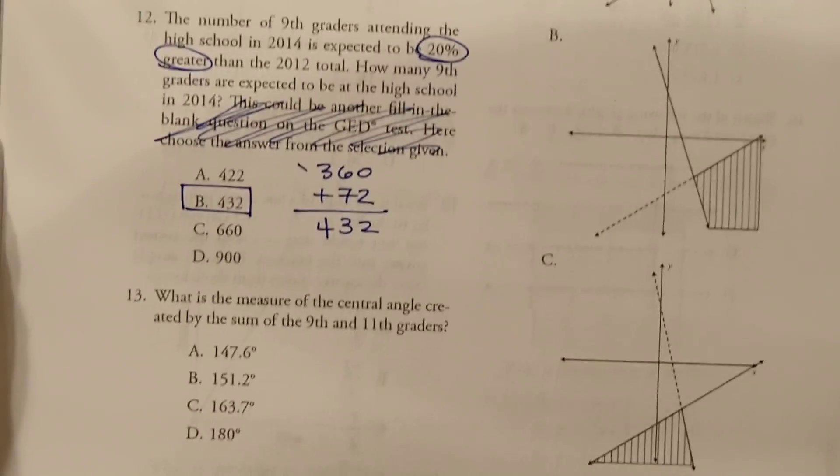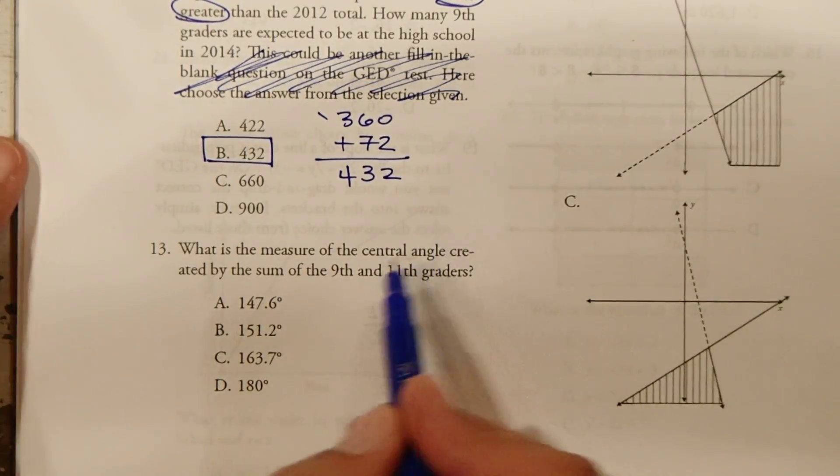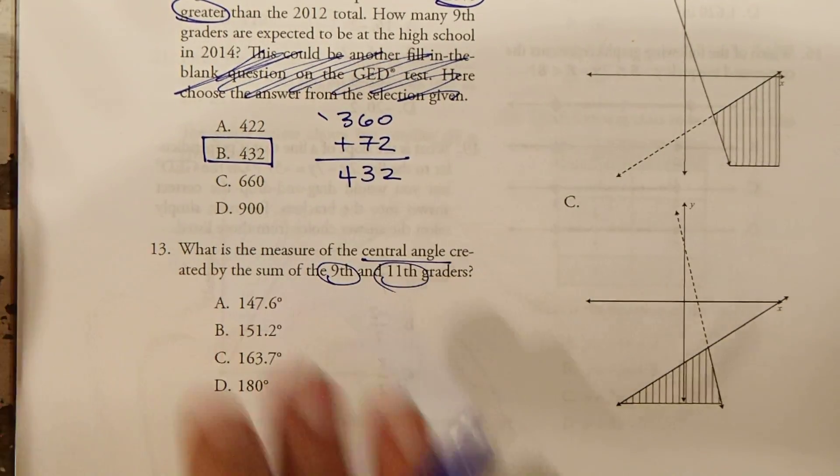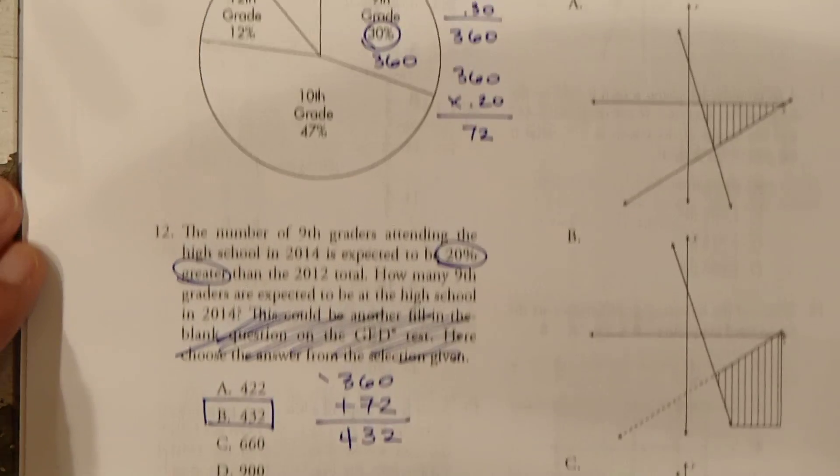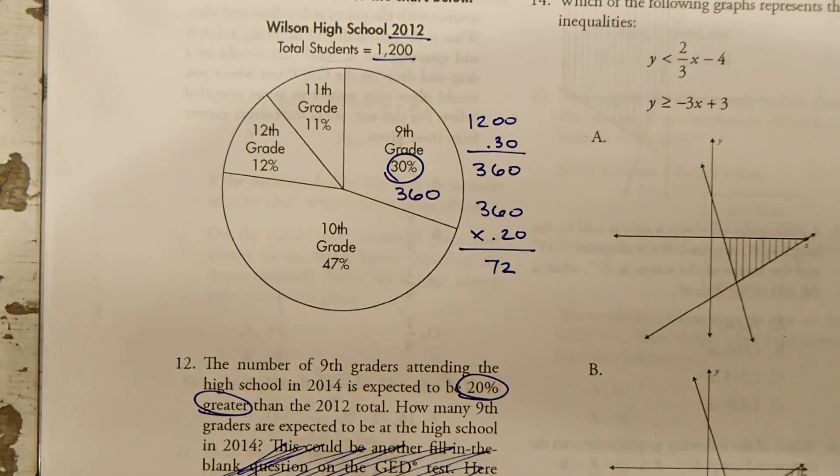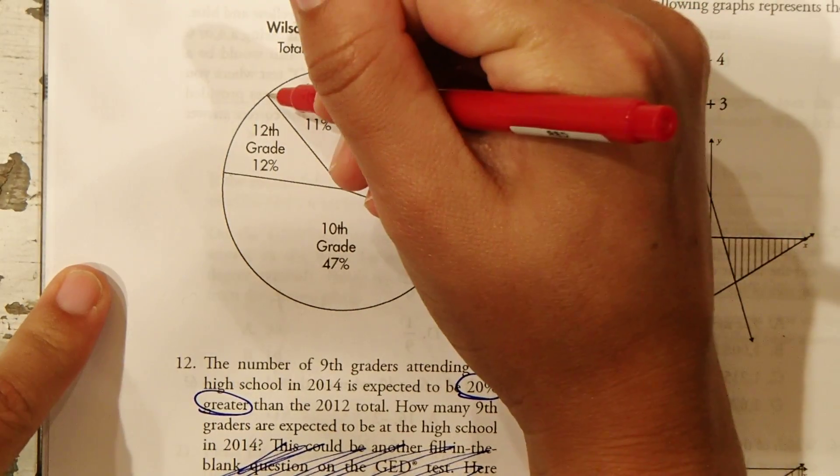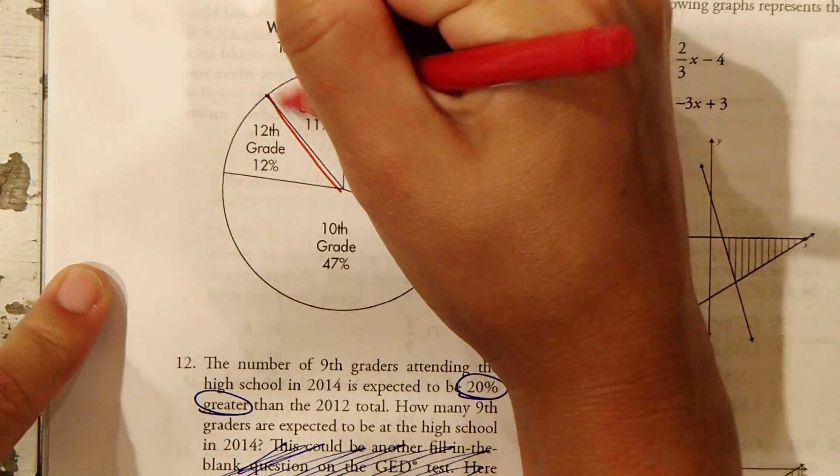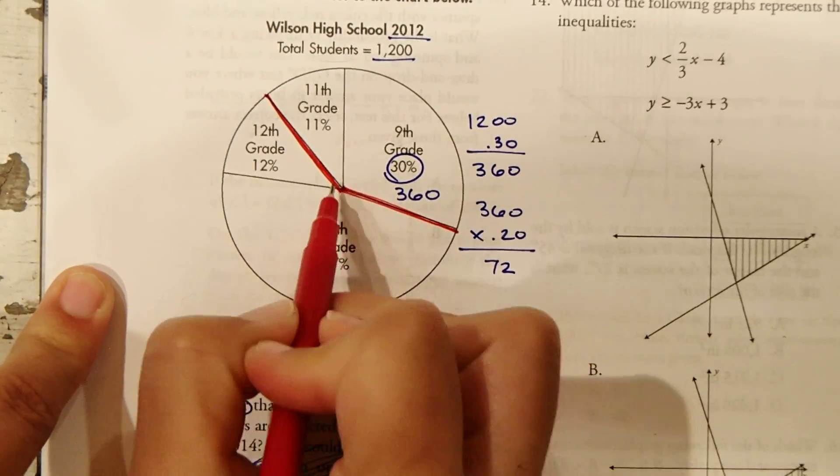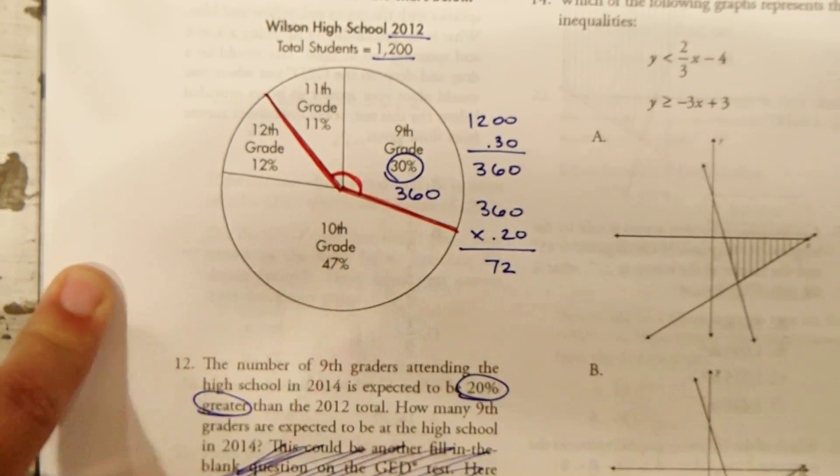All right, number 13. What is the measure of the central angle created by the sum of 9th and 11th graders? Okay, so let's go back up and look at this. We're looking for the central angle here. So 9th and 11th. I'm going to go ahead and identify the central angle here. So we're looking for this much here.